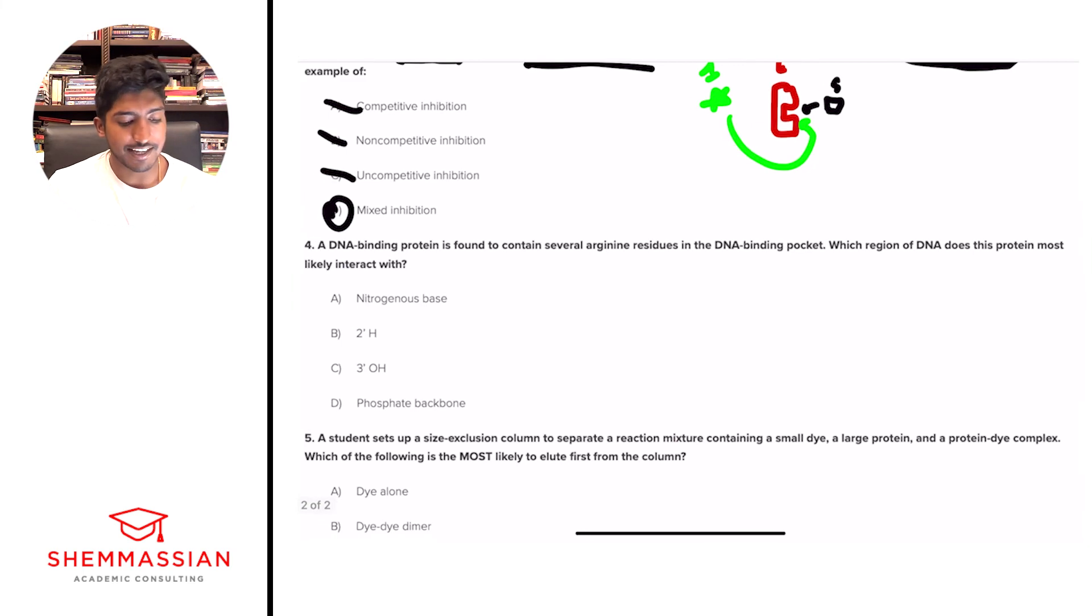Question number four. A DNA-binding protein is found to have several arginine residues in the DNA-binding pocket. Which region of DNA does this protein most likely interact with? Is it the A, the nitrogenous base, B, the 2'H, C, 3'OH, or D, the phosphate backbone? All right. So right away, we're looking at arginine. And remember, amino acids come up over and over again. So what's special about arginine? It has a positive charge. Okay? And so which region of DNA is the protein most likely to interact with? Well, we have a positive charge. A positive charge loves interacting with a specific type of charge, a negative charge, right? So we're going to be looking for an answer choice that has a negative charge.